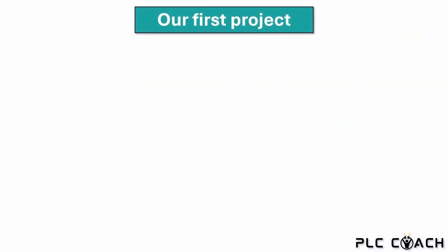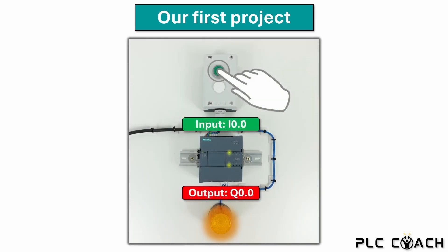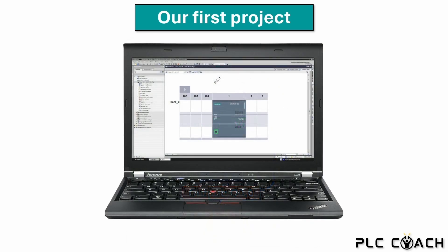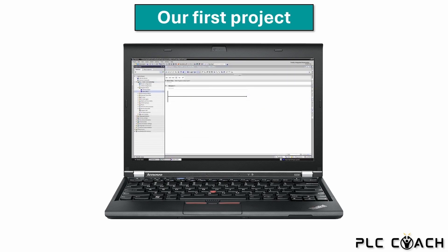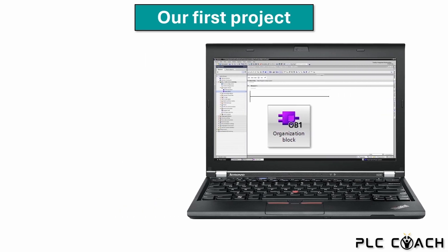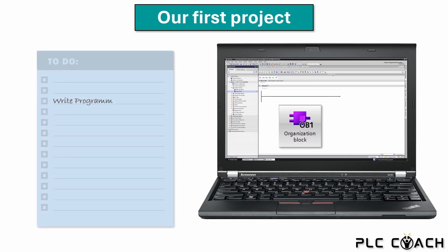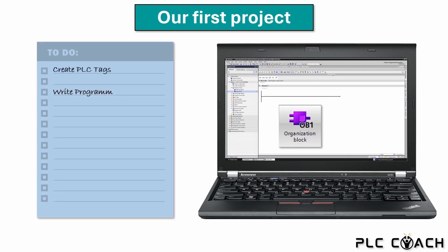Our main goal is still to write the program for our training system. In the previous video we created a project in the TIA portal which forms the foundation for everything we will do in the upcoming chapters. The TIA portal has already set up the Organization Block OB1 for us — this is where we can write our program. But before we can jump into programming we still have two more tasks on our to-do list. First, we need to set up the PLC tags, which will help us link the program to our inputs and outputs.